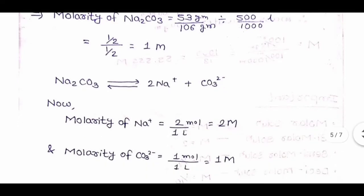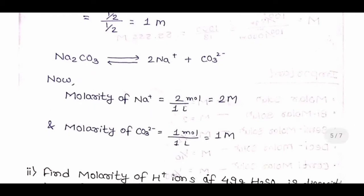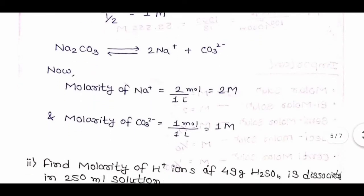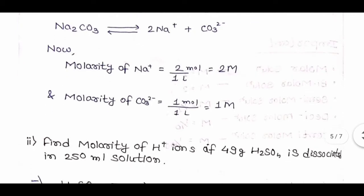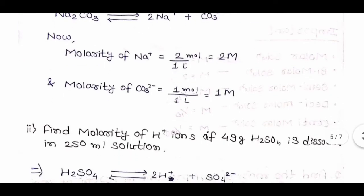Na2CO3 dissociates into 2 Na⁺ ions and one CO3²⁻ ion. Therefore molarity of Na⁺ = 2 × 1 = 2 M, and molarity of CO3²⁻ = 1 × 1 = 1 M.